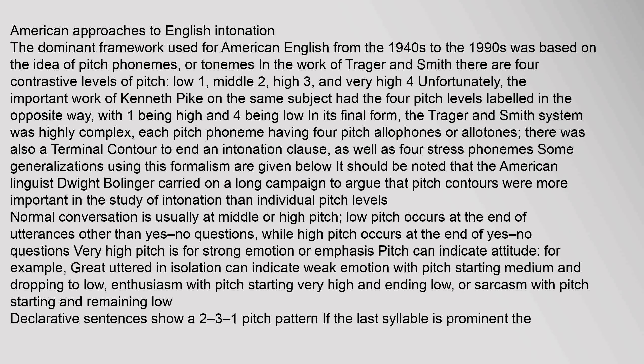The dominant framework used for American English from the 1940s to the 1990s was based on the idea of pitch phonemes, or tonemes, in the work of Trager and Smith. There are four contrastive levels of pitch: low (1), middle (2), high (3), and very high (4). Unfortunately, the important work of Kenneth Pike on the same subject had the four pitch levels labeled in the opposite way, with 1 being high and 4 being low. In its final form, the Trager and Smith system was highly complex, each pitch phoneme having four pitch allophones or allotones, and there was also a terminal contour to end an intonation clause, as well as four stress phonemes.